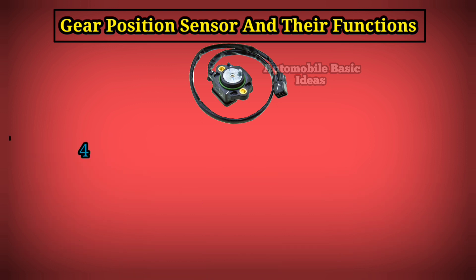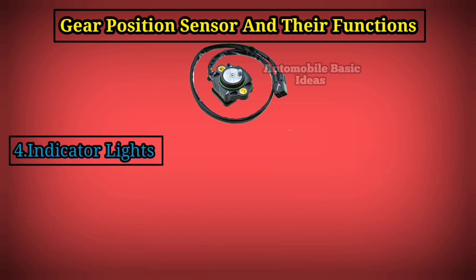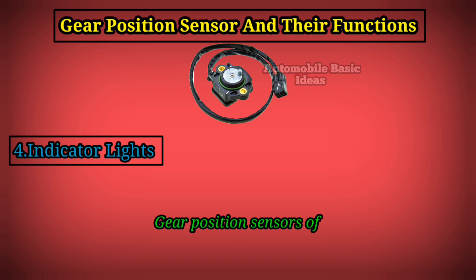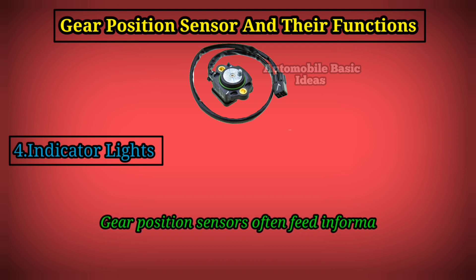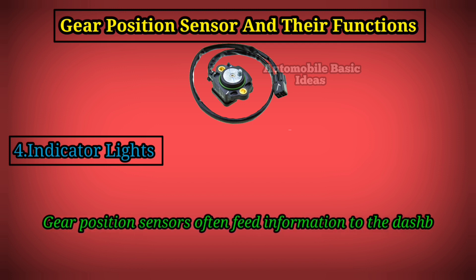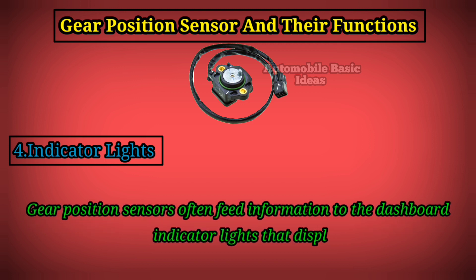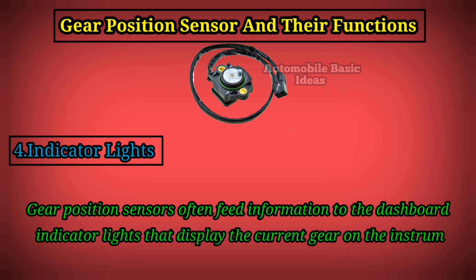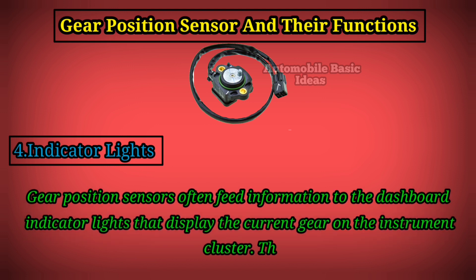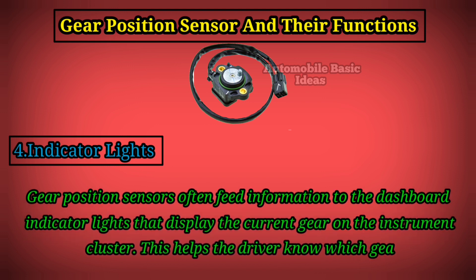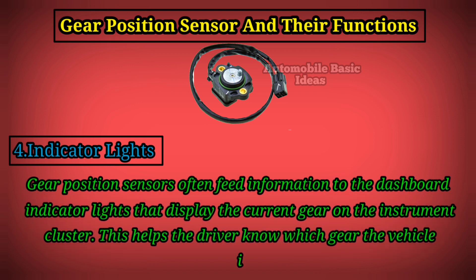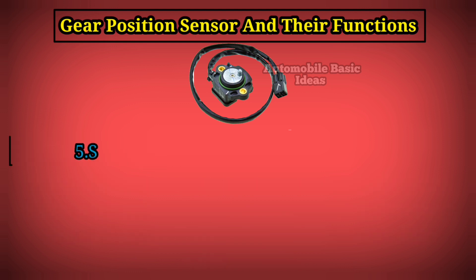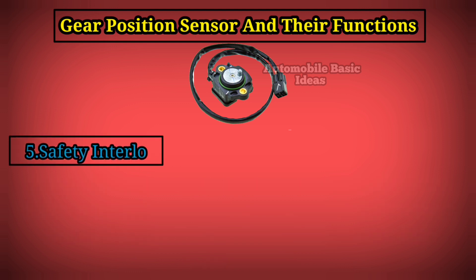Four: indicator lights. Gear position sensors often feed information to the dashboard indicator lights that display the current gear on the instrument cluster. This helps the driver know which gear the vehicle is in at all times.